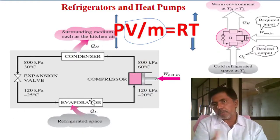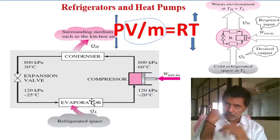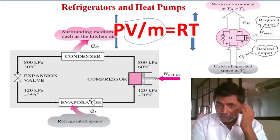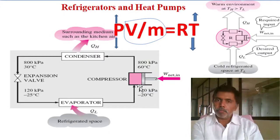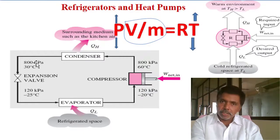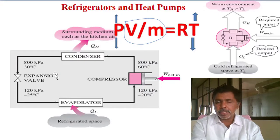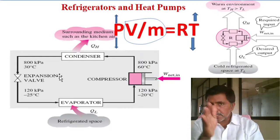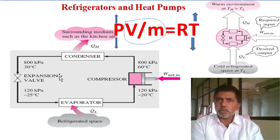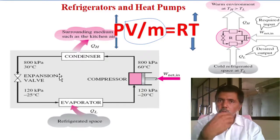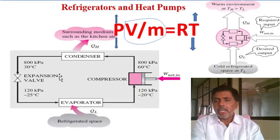This liquid enters the evaporator, absorbs heat, converts to vapor, and that vapor is compressed — cyclic operation. This cycle is shown in the anti-clockwise direction. Power generation is represented in the clockwise direction; power absorption is represented in the anti-clockwise direction.